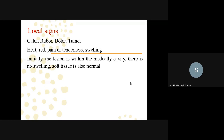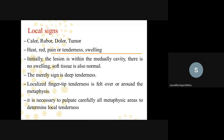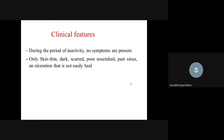Local signs follow the classic pattern: rubor, calor, dolor, and tumor — redness, heat, pain or tenderness, and swelling. Initially the lesion is within the medullary cavity with no swelling and normal soft tissue. In acute condition the main sign is deep tenderness and localized fingertip tenderness around the metaphysis. It is necessary to palpate carefully all metaphyseal areas to determine local tenderness.